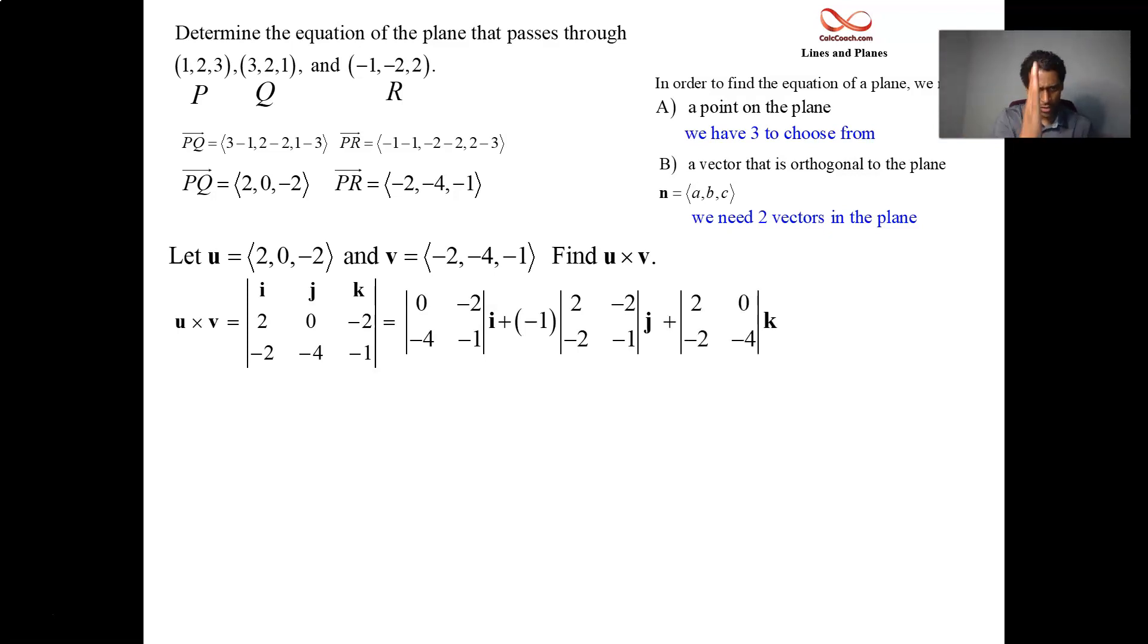And then the K, cross out the third column in the first row, and you have a 2 by 2 matrix there. And then you'll have a 0 minus 8 in the I component. Negative 2 minus 4, but then a negative 1 on that in the J component. And then negative 8 minus nothing in the K component. So your cross product is negative 8, positive 6, and negative 8.